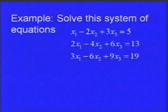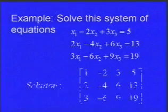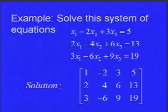Maybe you can tell it's inconsistent, maybe you can't. Most of the time you won't be able to. Let's pop it into the augmented matrix: [1 -2 3 5], [2 -4 6 13], [3 -6 9 19]. Let's do Gauss-Jordan elimination like normal.